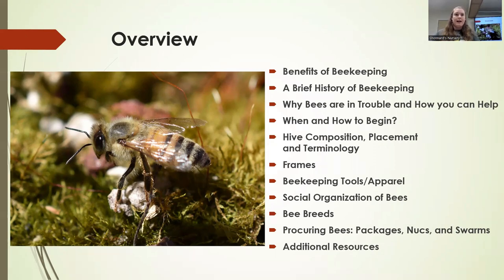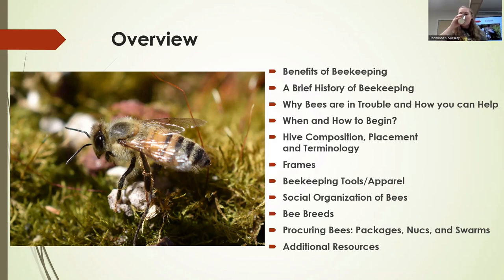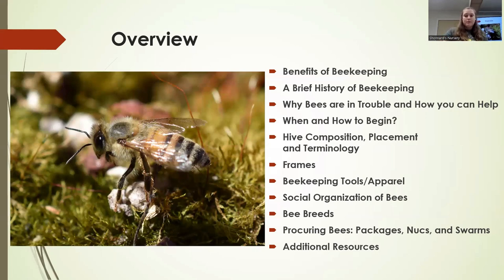We'll cover frames, separate from your hive boxes, your bodies, your telescoping tops, just to keep things organized. Beekeeping tools and apparel — I'm going to cut out anything frilly and get down to the things you absolutely need in your apiary. We'll go through the social organization of bees: what's a drone, what's a queen, what's a worker, what do they do, what's their functionality inside the hive. Different bee breeds and hybrids, and how you will actually procure your bees, whether it be a package, a nuke, or capturing a swarm. There are also some additional resources at the end — websites, books, things like that.